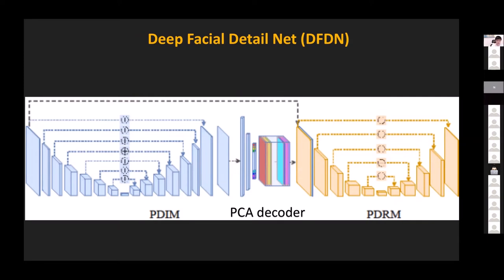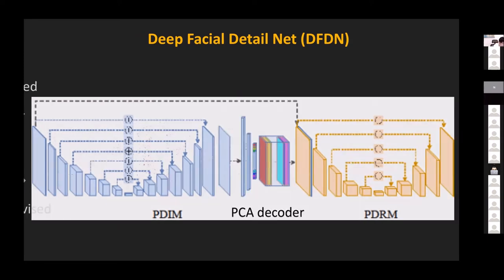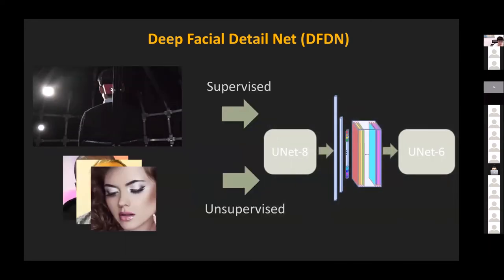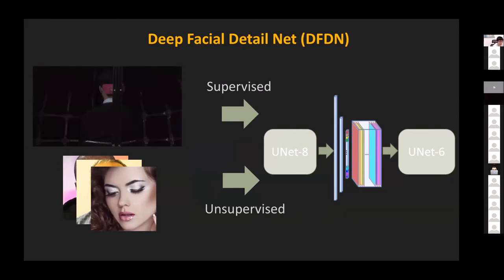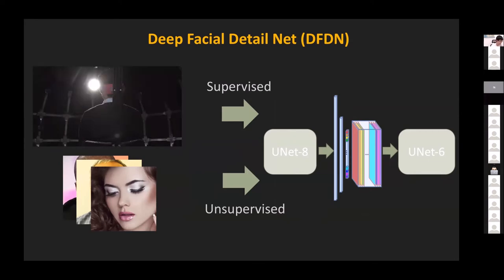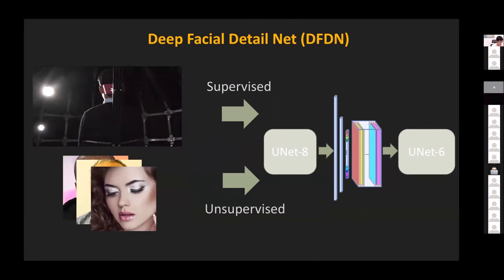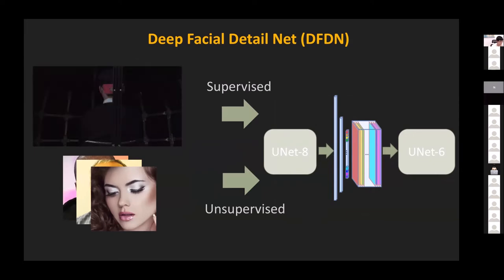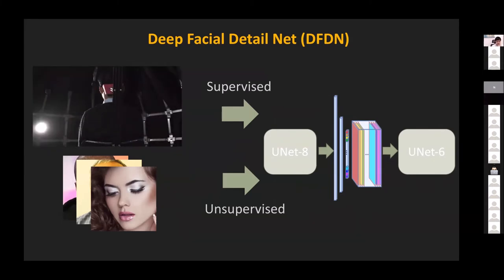The essential idea is decomposing the image into patches and using the patches to infer fine geometry within each patch. For training we introduced two schemes: supervised training uses our own data plus the USC light stage data with very high quality 3D geometry of human faces. Unsupervised training also plays an important role because we have very limited training data, so we use online images without geometry.